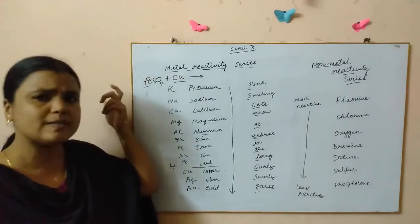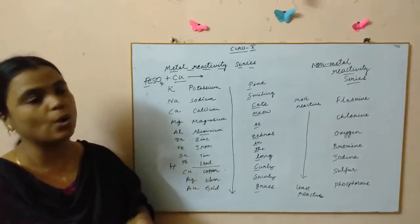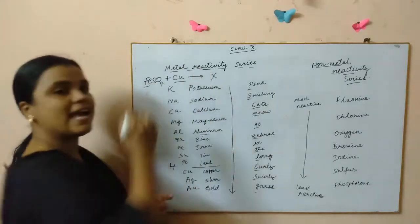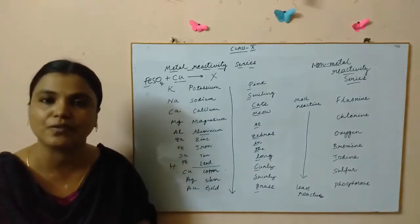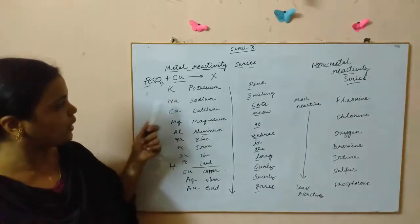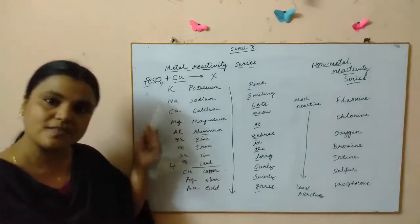So what do you mean? Iron is more reactive. Iron is more reactive than copper, so can copper now displace iron from its compound? No, so the reaction will not happen because copper is lesser reactive than iron sulfate.